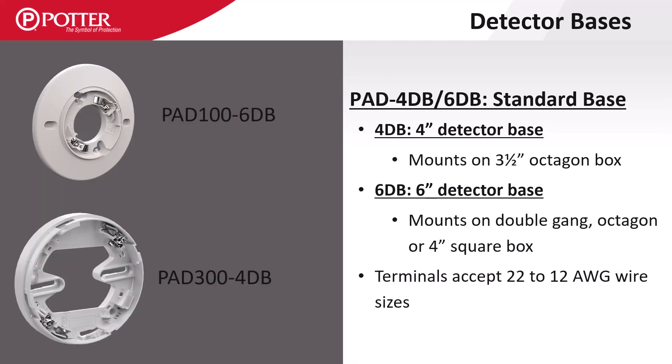The PAD 4dB and 6dB are standard 4 and 6 inch detector bases. The 4 inch base mounts on a 3 and a half inch octagon box only, while the 6 inch can mount on several different boxes.